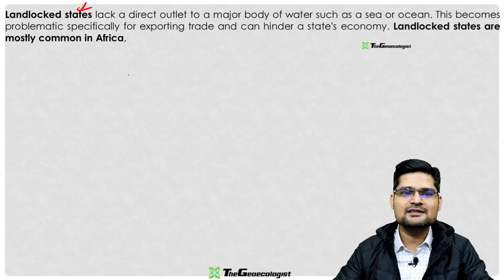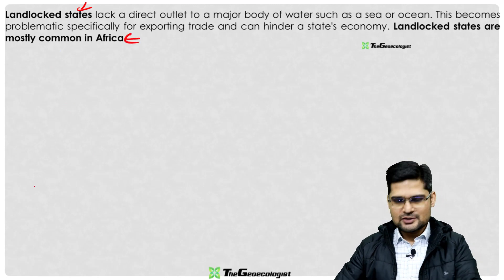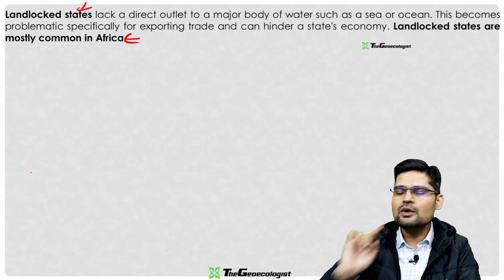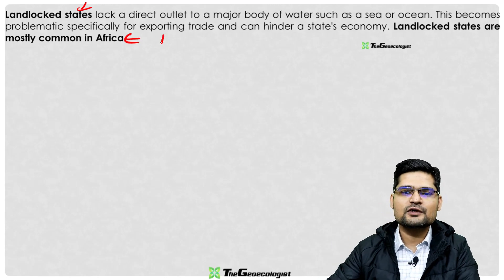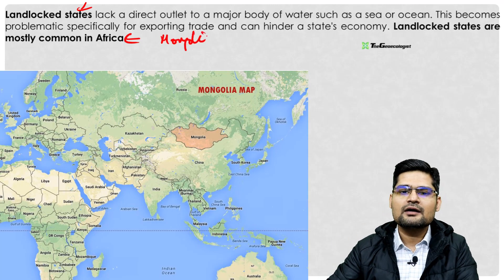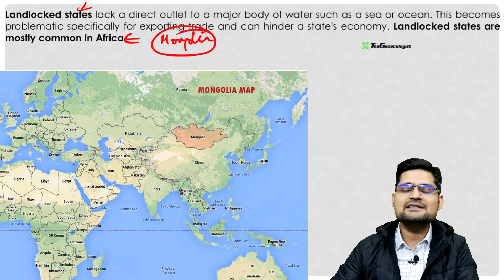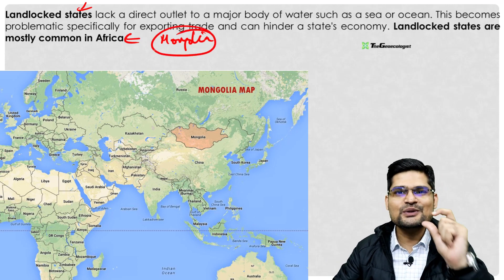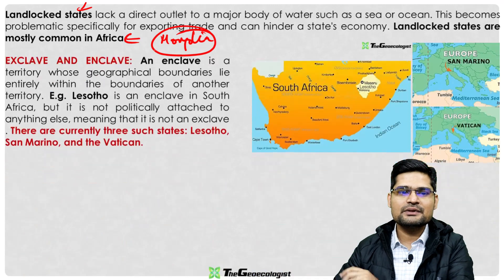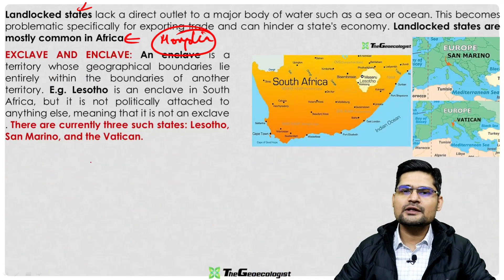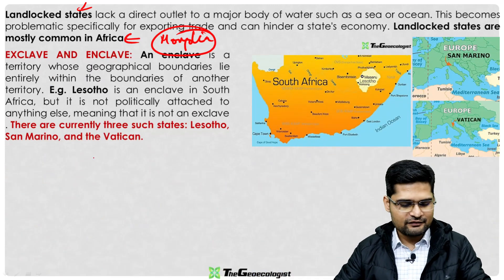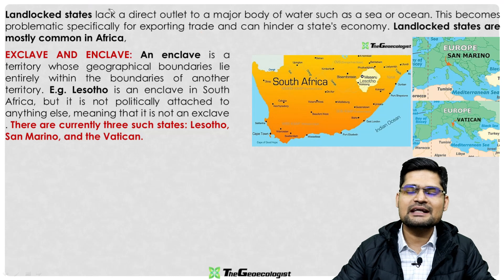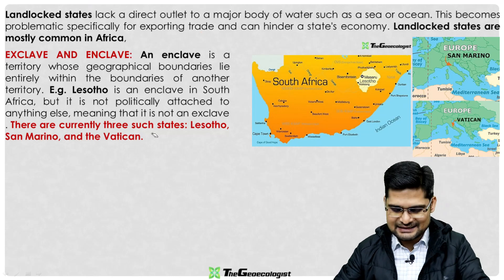There are also landlocked states, found mostly in Africa, the Middle East, and Central Asia. Mongolia is a key example, sandwiched between Russia and China.